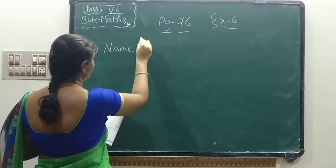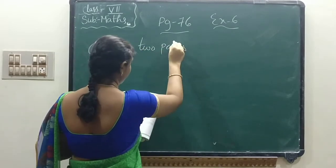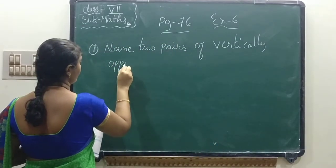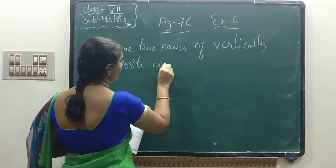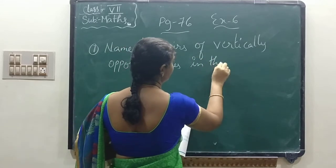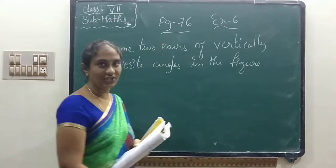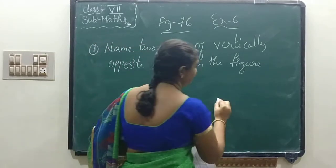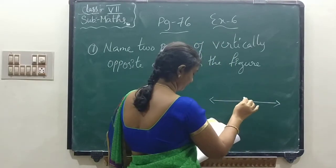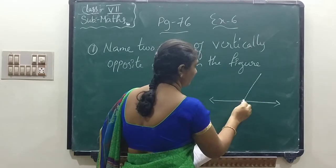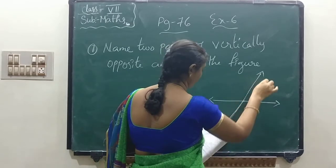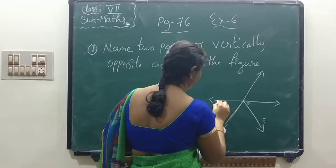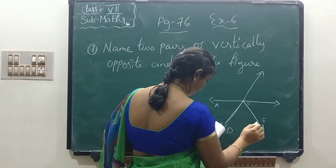The first question they have given: Name two pairs of vertically opposite angles in the figure. They have given a figure with five points.